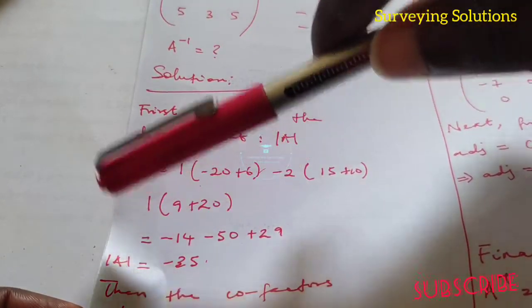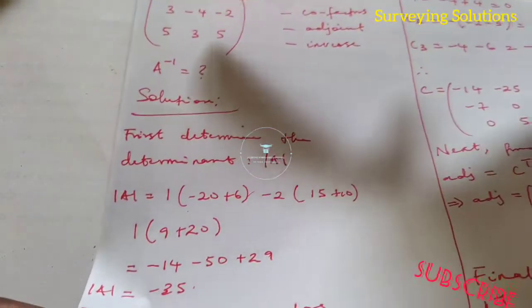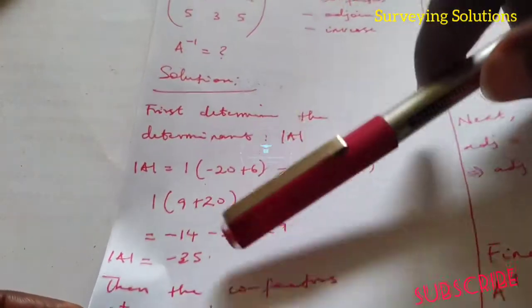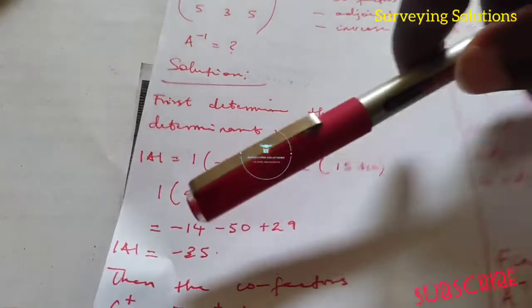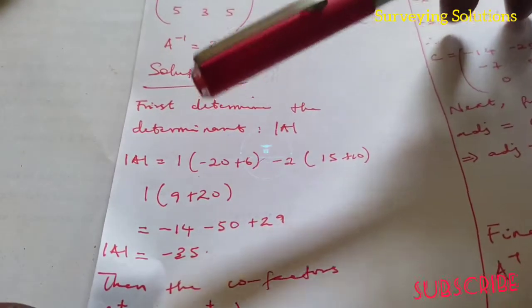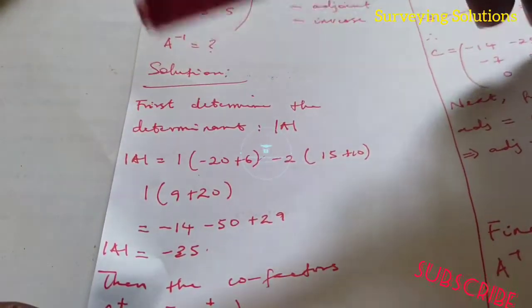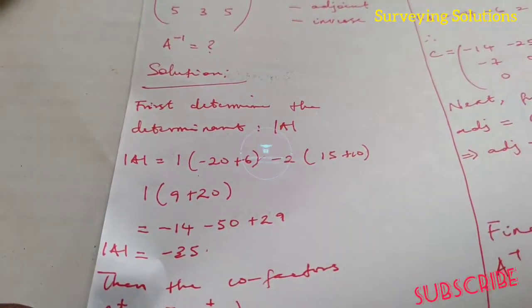The determinant of this matrix is minus 35. The next thing is we find the cofactors.